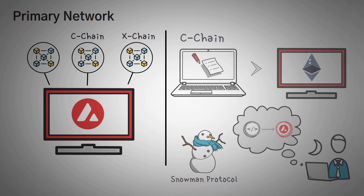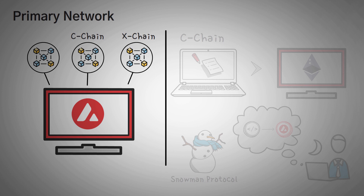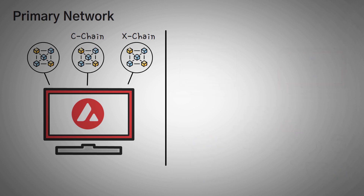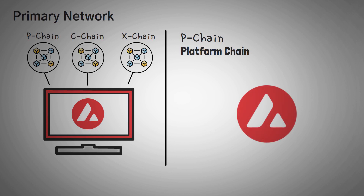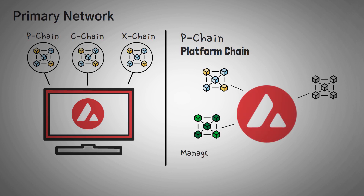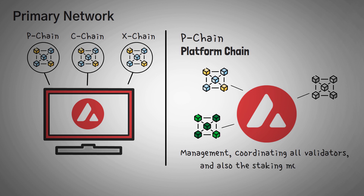So we have the X-Chain for transactions, we have the C-Chain for smart contracts, and next we have the P-Chain, or the platform chain, which is specifically for management of the subnets. It also coordinates all the validator nodes and the staking mechanism.